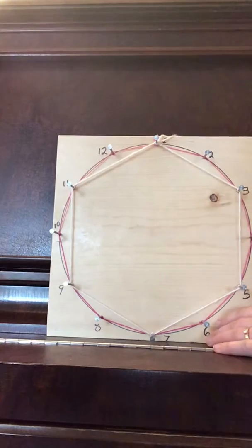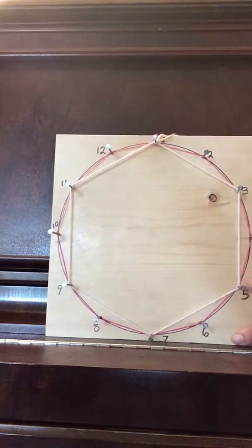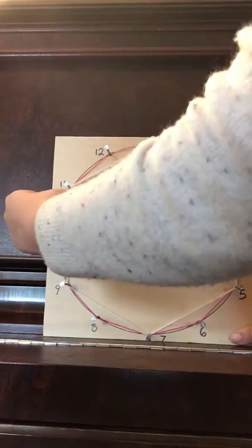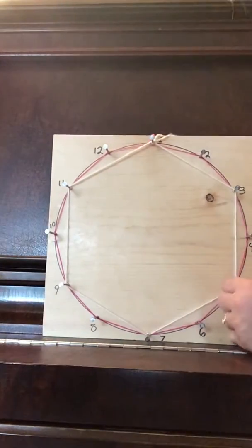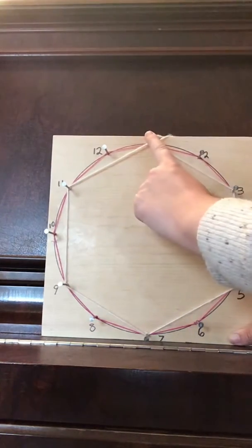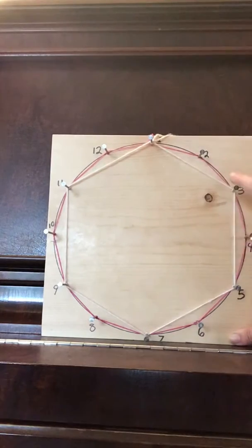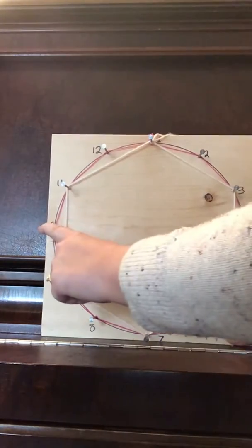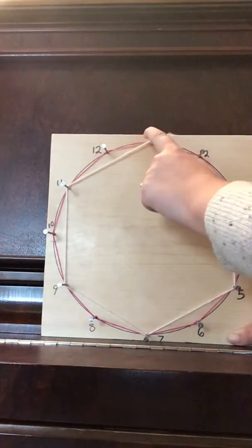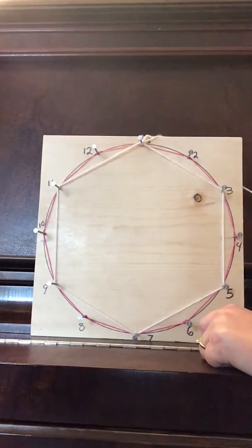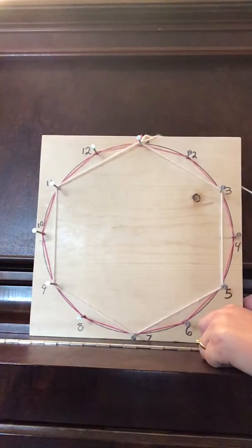So you're going to need a lot of different colors, but you can use the same one if you want to, but I'm going to try to use a different color for each one. Now, if you want to take a step ahead and you're feeling like, oh, I want to keep going, it is really fun. So the next one you're going to do is you're going to skip two nails. So you're going to go from one, skip one, two, and three. So one to four, skip five and six, four to seven, skip eight and nine, seven to 10, skip 11 and 12, 10 to one. Okay. So you can go ahead and skip two nails. Then you can skip three nails and so on and so forth.